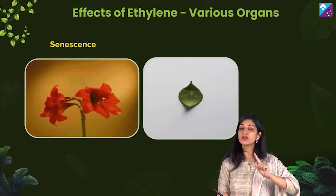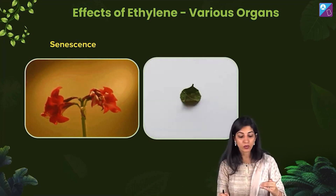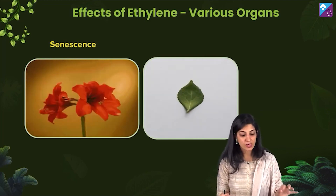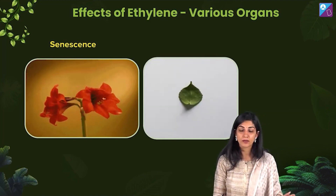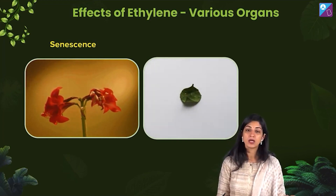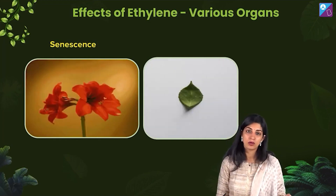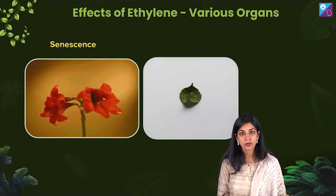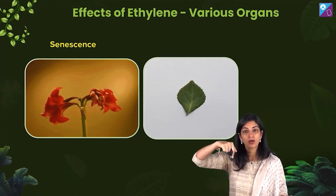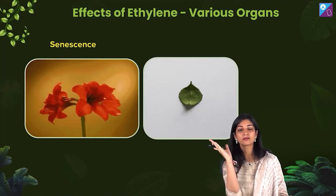Ethylene can also bring about this senescence or the aging process in leaves as well as the flowers. You see the flowers withering away, and the leaves — what will happen? The chlorophyll will get degraded. The leaf will become yellow or brownish. It will bend downwards — epinasty.